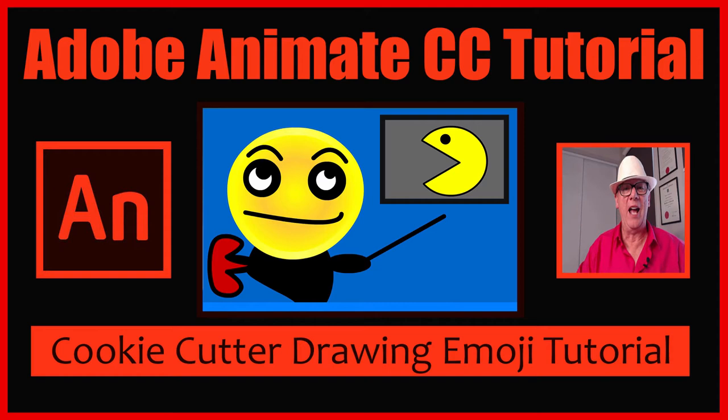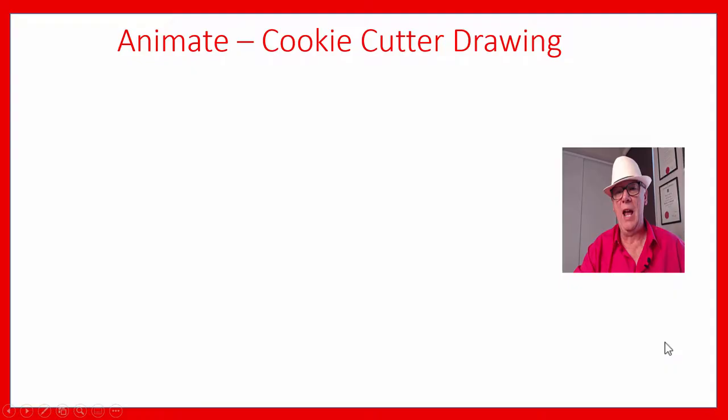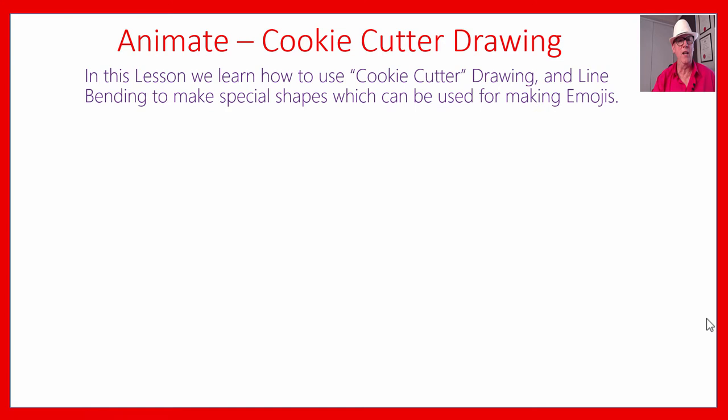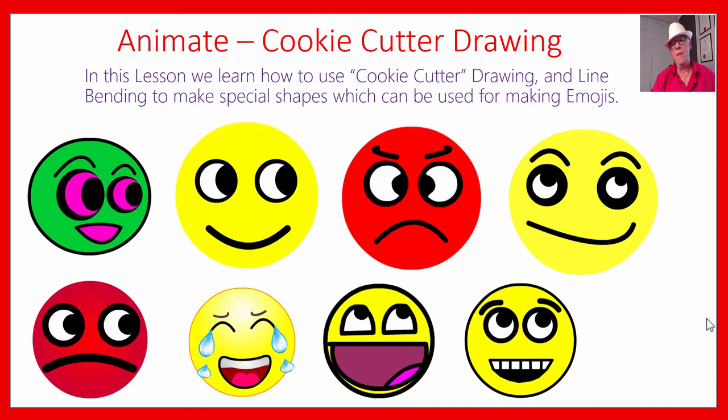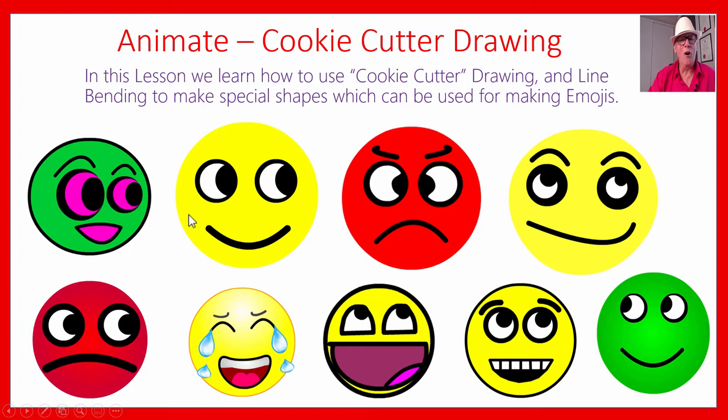Hey, this is Pasi from Pasi's World of ICT, the guy with the white hat, and we've got an Adobe Animate CC tutorial. We haven't had one of these for such a long time, and this one is we're going to do cookie cutter drawing, and what you can do with that is you can make emojis. So we're going to make all these little emoji guys, and we're going to use cookie cutting mainly to make the eyes for them. And then what you can do is you can bend lines to make either an unhappy emoji or a happy emoji - we like the happier ones better, although this one on the right hand side, he's not too sure of himself.